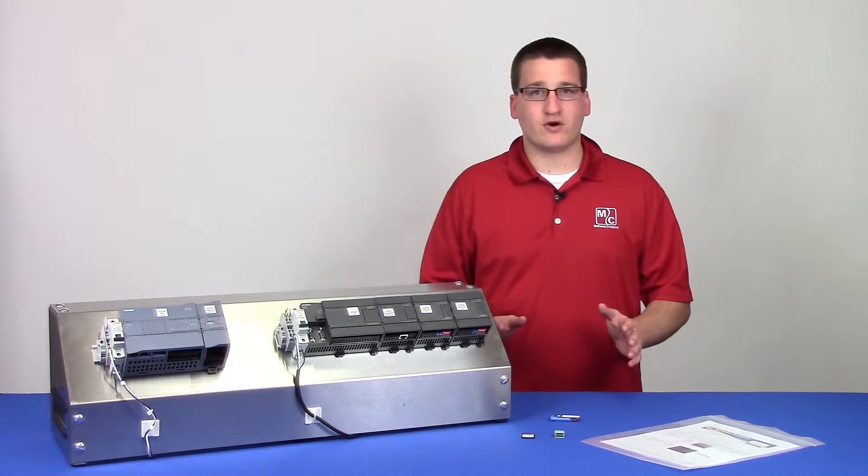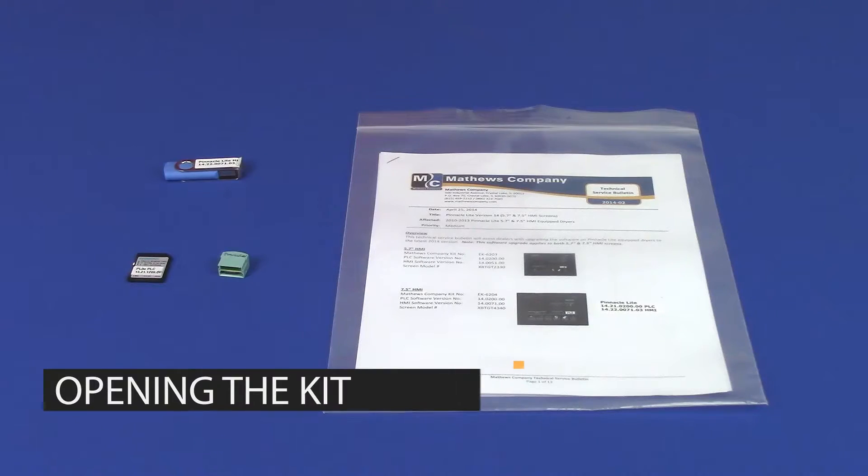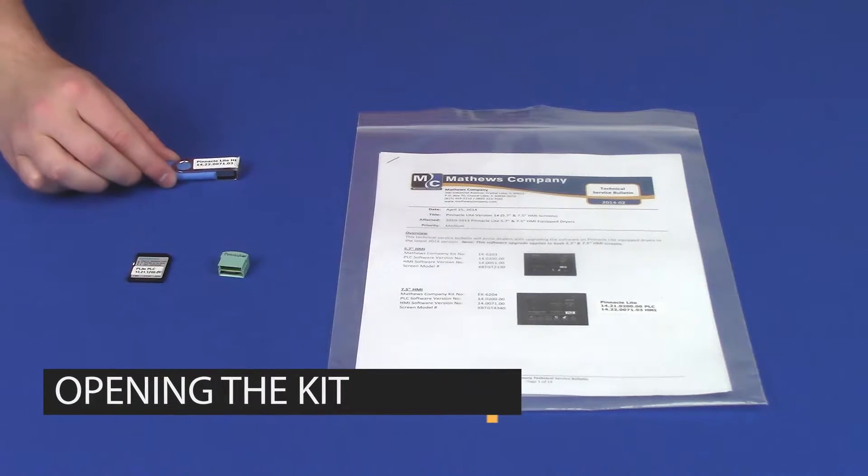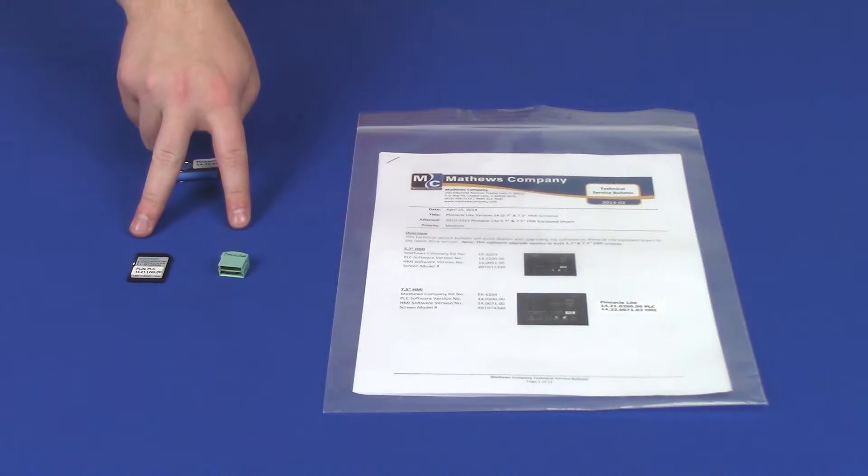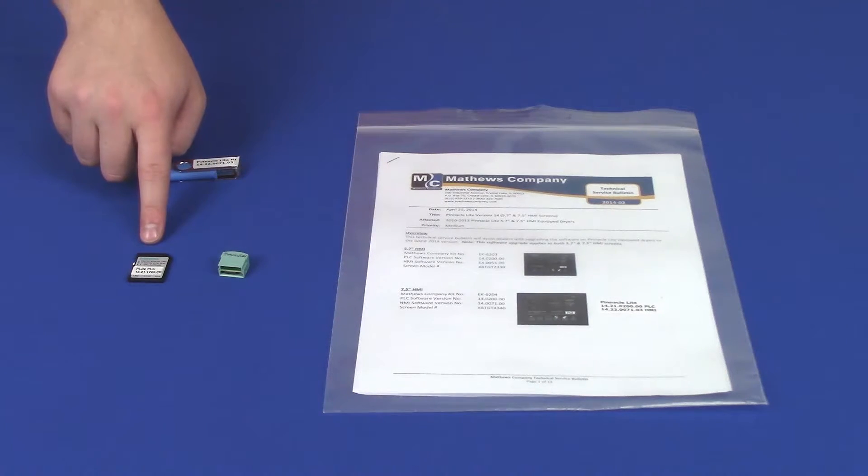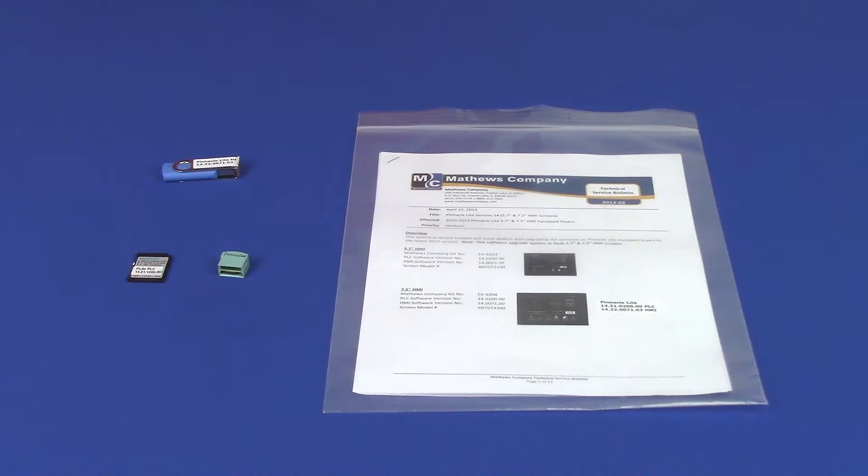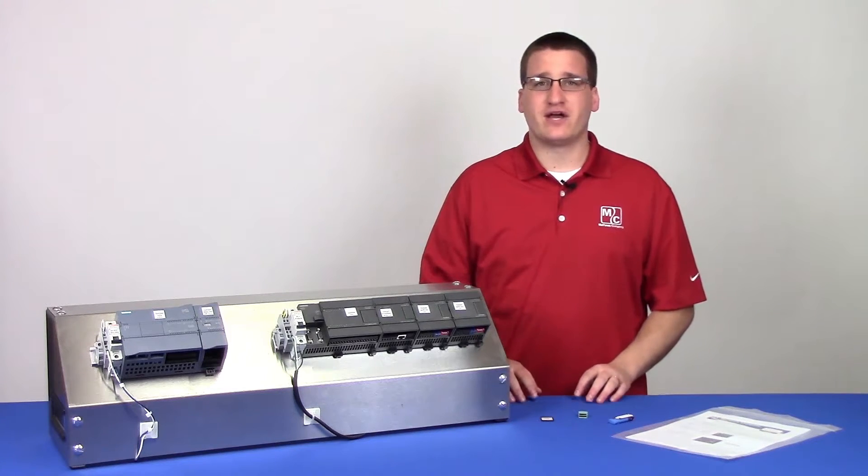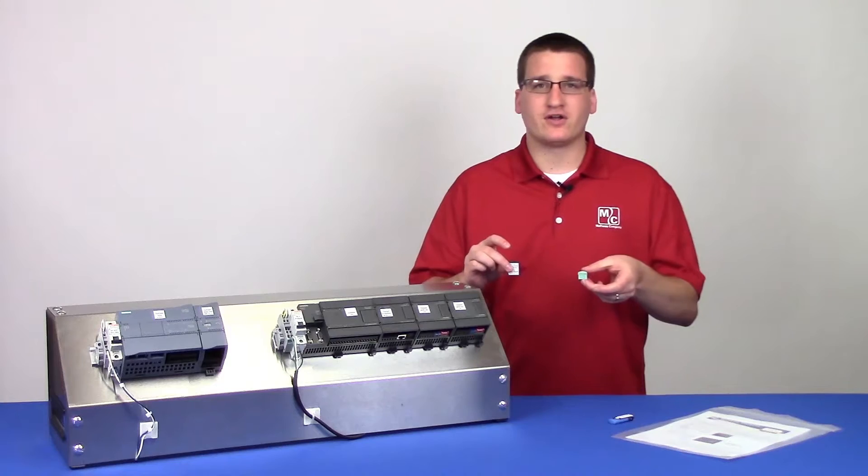Let's take a second to look at what components came with your kit. You should have a USB jump drive, one of two memory cards. The green one will be sent if you have an S7-200 PLC, and the black card will come if you have an S7-1200 PLC. And you'll have instructions to help you with this process. You can set your thumb drive aside for now, but grab whichever memory card came with the kit.